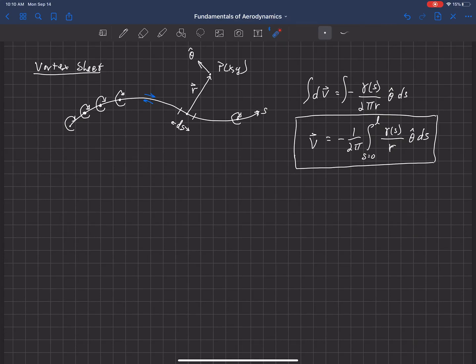Previously we saw that we could replicate a source sheet by using what are called source panels, where instead of having an entire sheet where we need to integrate along an equation that looked like this, we were able to put panels along that sheet and replicate the strength by these straight panels.